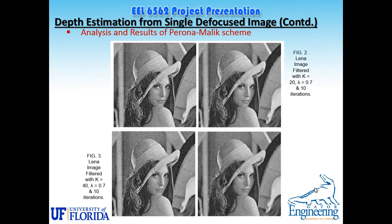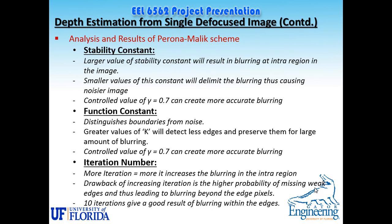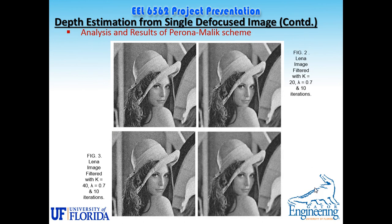Welcome back to the second part of the presentation. We left off at the three principles of the Perona-Malik scheme. This is the analysis of results where we see a noisy image of Lena used for blurring. Figure 2 uses a function constant of 20, gamma 0.7, and 10 iterations. Figure 3 uses the same parameters except the value of k is kept at 40, giving a smoother and less noisy image.